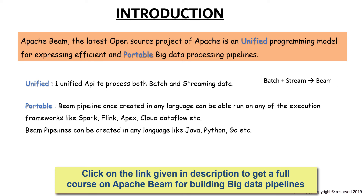As a backend runner, currently it supports Apache Spark, Flink, Cloud Dataflow, Apache Apex, Apache Samza, and also Apache Gearpump, which is an incubating project of Apache. So in short, Apache Beam is a one-stop shop for all languages to write data processing pipelines and also for the execution engines to run the pipeline.